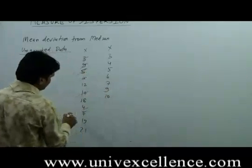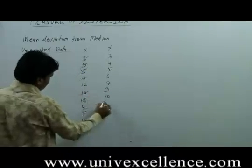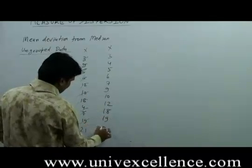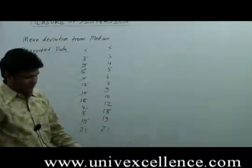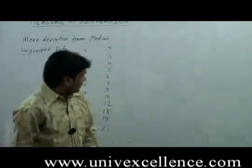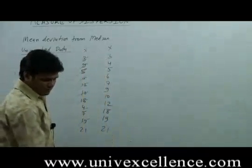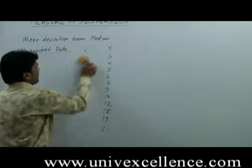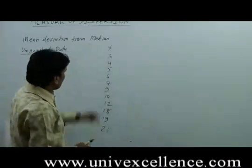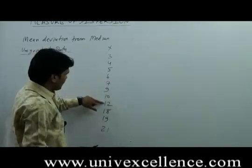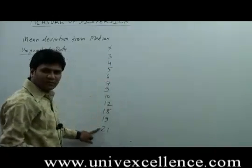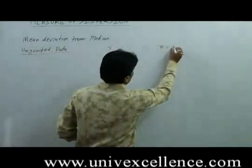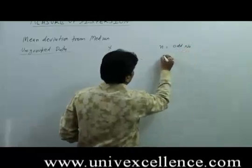...then 9, 10, 12, 18, 19, and 21. The total number of values are: 1, 2, 3, 4, 5, 6, 7, 8, 9, 10, 11. Since the number of values n is an odd number...